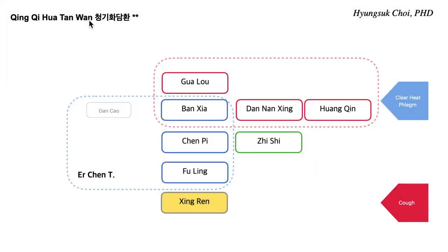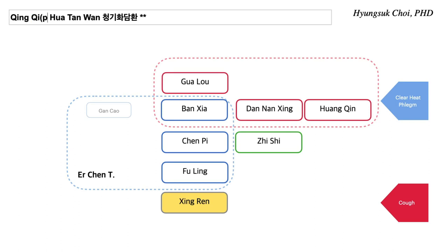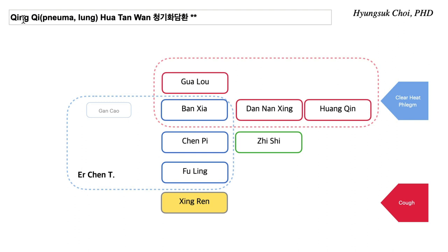Qing Qi Hua Tan Wan. Tan means phlegm. So Qing Qi — what does Qi mean? Qi means pneuma. Air. So it means lung. Qing Qi means clear lung heat. This pneuma is a word from ancient Greek meaning lung and air, or spirit — very similar to the concept of Qi. And Hua Tan means transform phlegm. So: Qing Qi Hua Tan Wan.